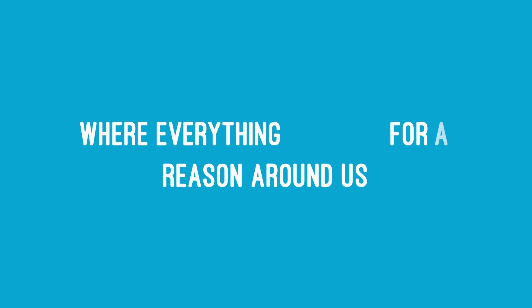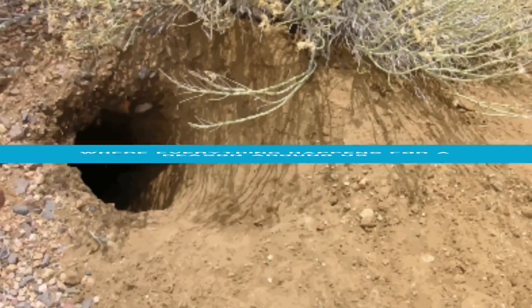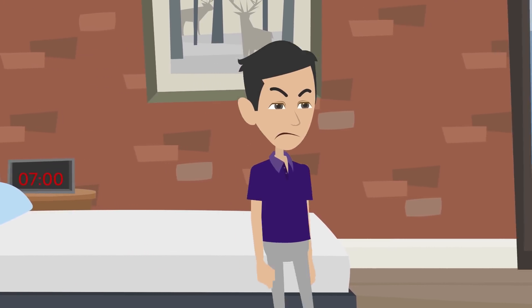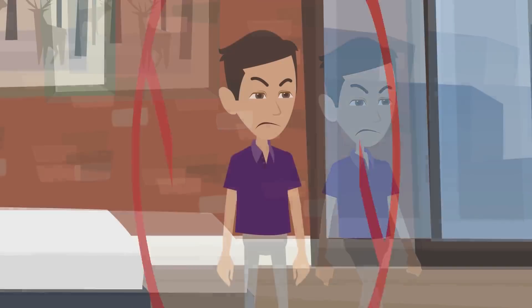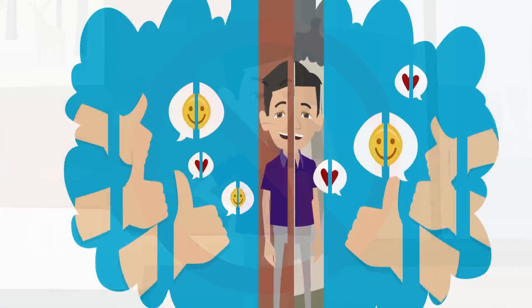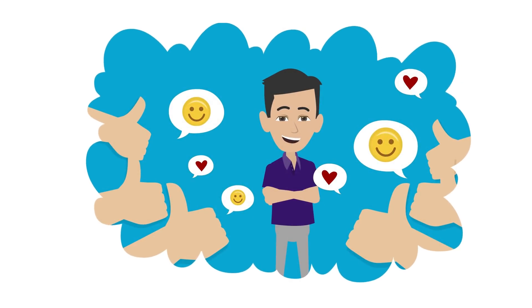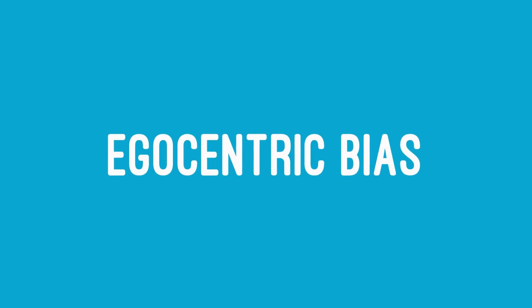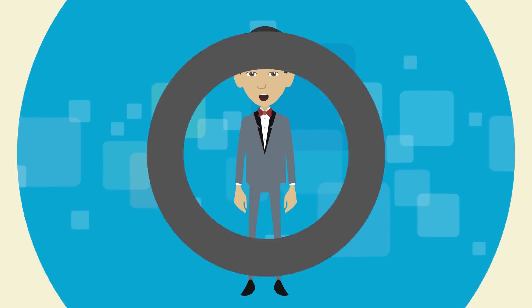The egocentric bias is a state of overthinking everything because you think everything is all about you. Psychologists argue that we think like this because we are attempting to give our lives a coherent narrative where everything happens for a reason around us. But this kind of thinking will take you down a rabbit hole where you think every word said around you is about you.